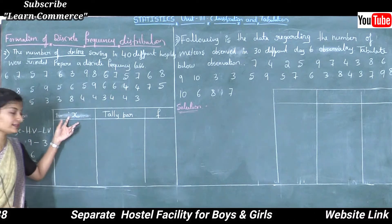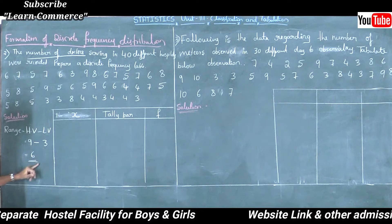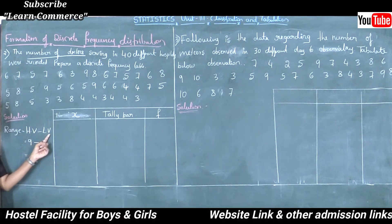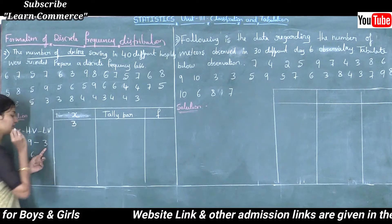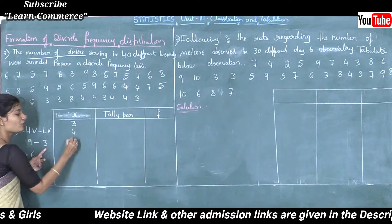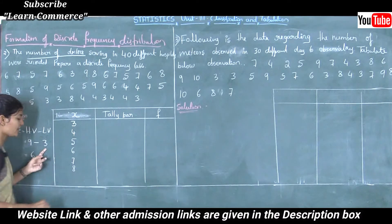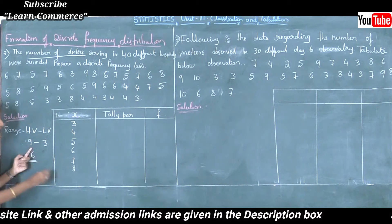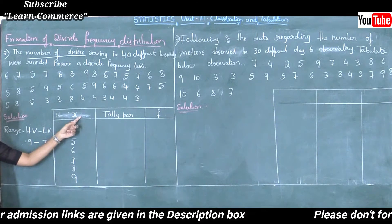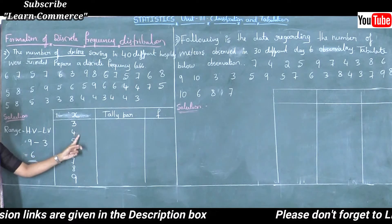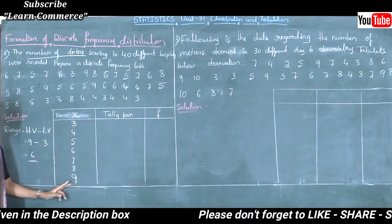What are the variable values given? The range is 9 minus 3, which is 6. The lowest value is 3, so I will start the values from 3: 3, 4, 5, 6, 7, 8. The highest value is 9, so I will stop at 9. The X variable values are 3, 4, 5, 6, 7, 8, and 9.